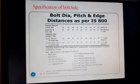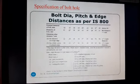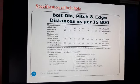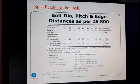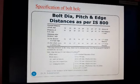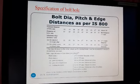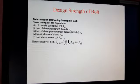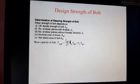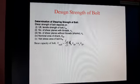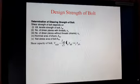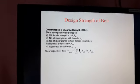Now we have the specification of the bolt, the type of joint, and the details of the bolt. Next, what we have to do is analyze the failure of the bolt — like shear failure, tension failure, and bearing failure — and how to design it for the steel connection. So design of strength of bolt means...